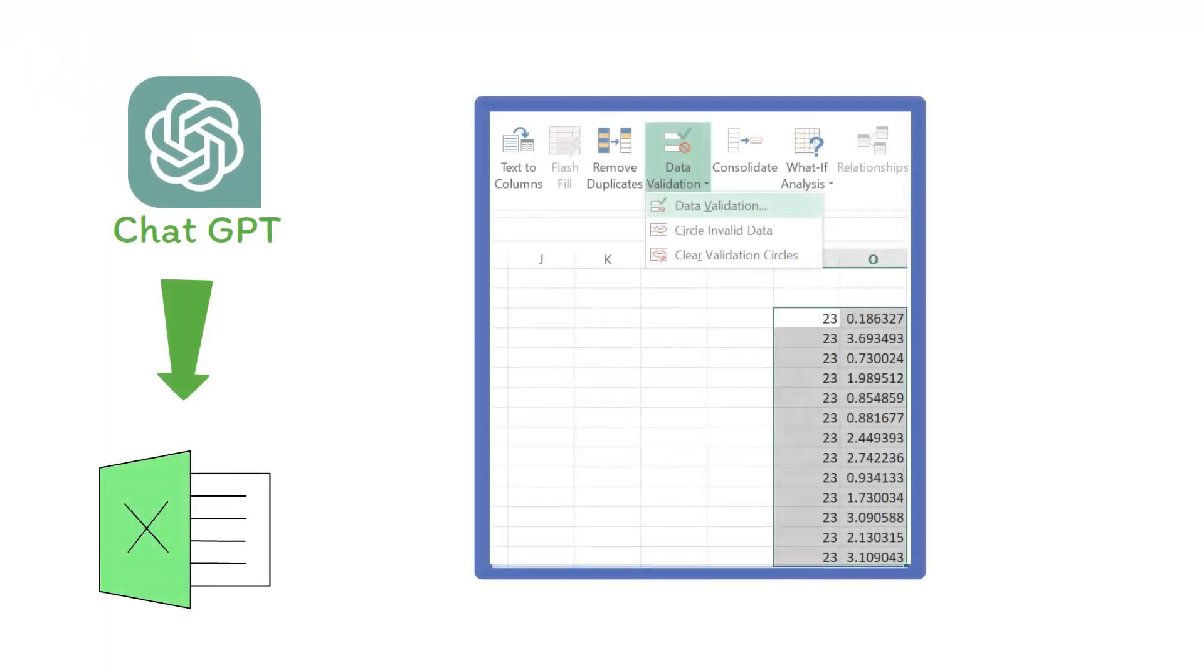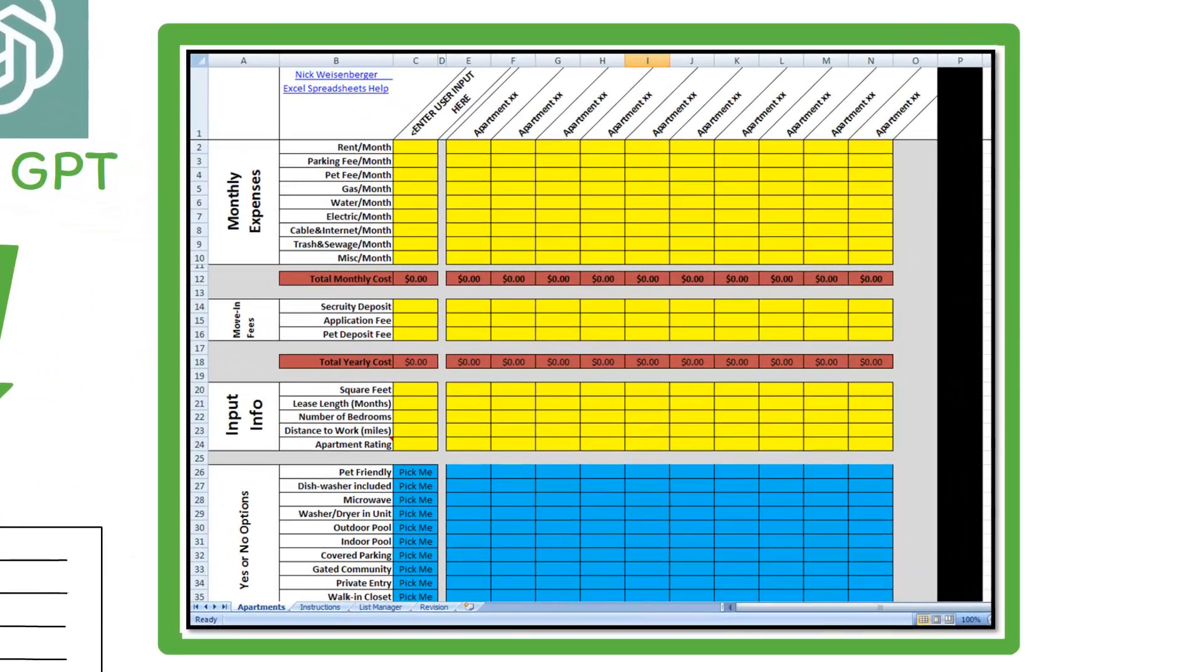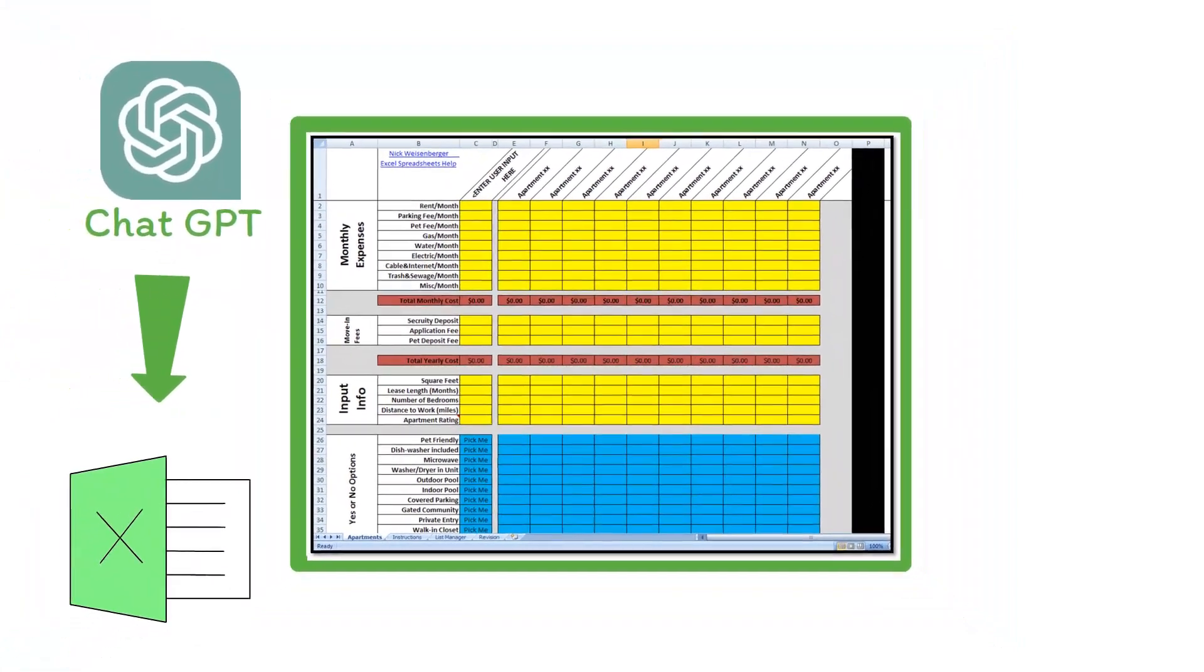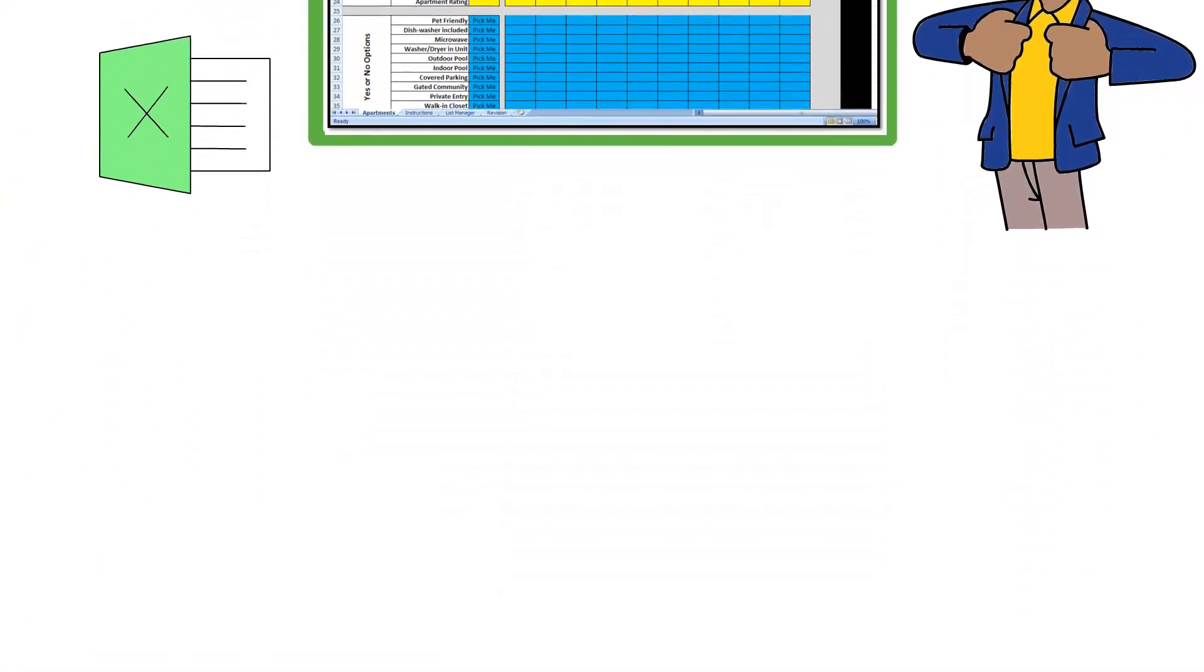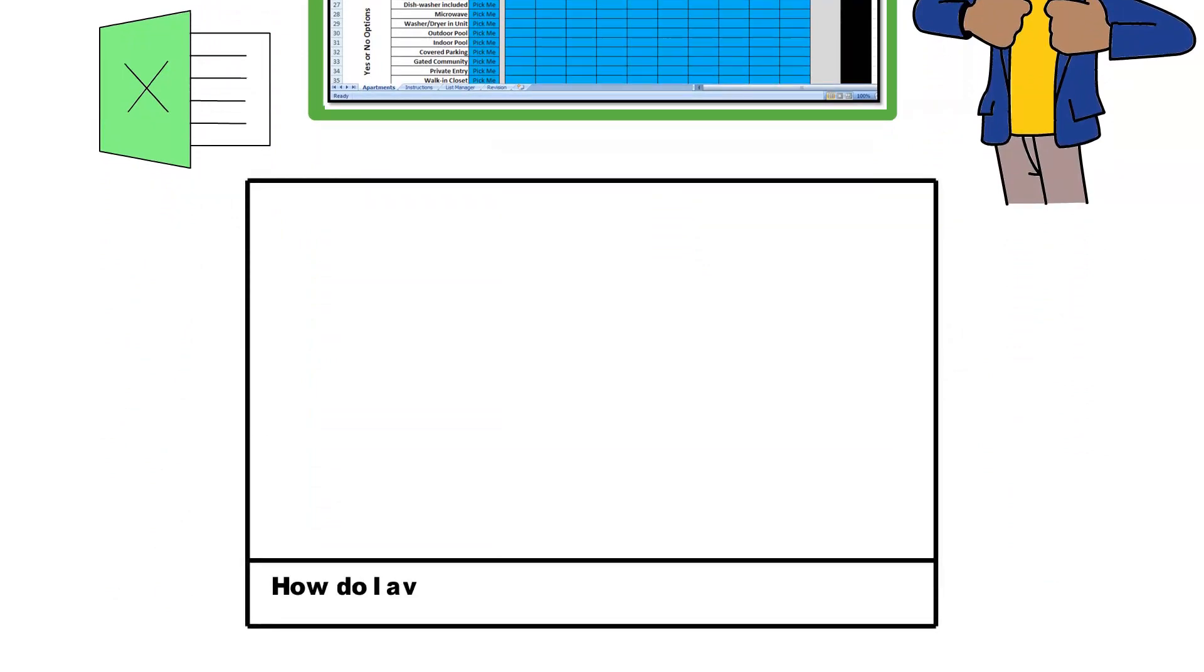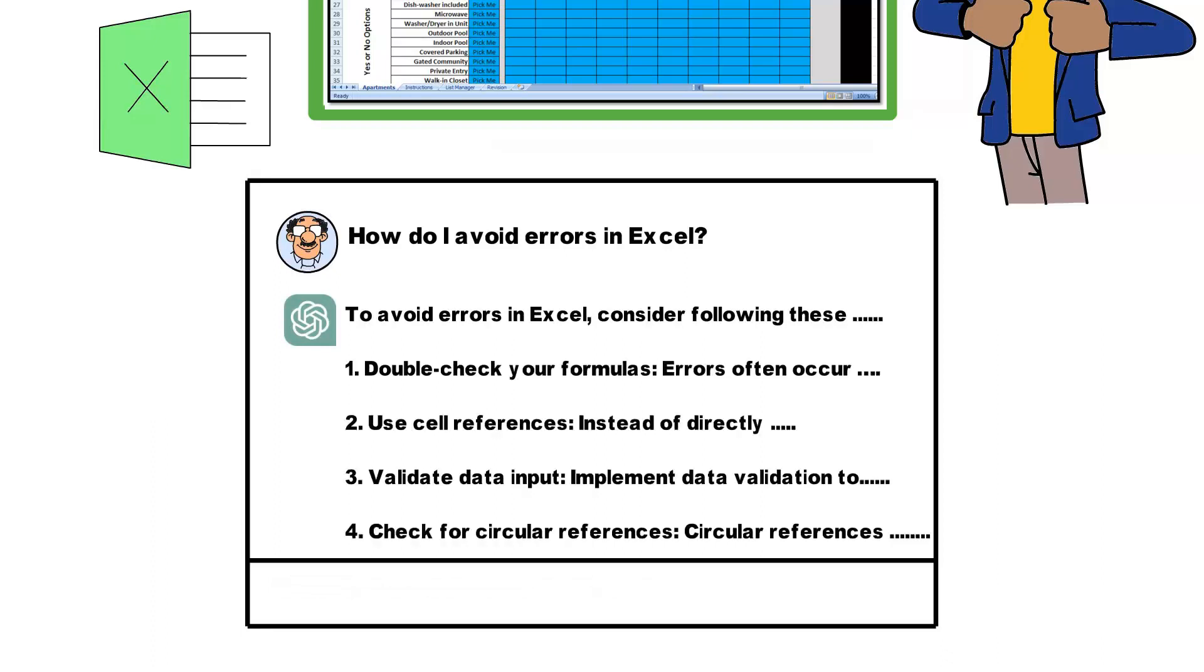Additionally, ChatGPT can provide guidance on Excel best practices. Good practices like data validation, conditional formatting, and error checking are essential for maintaining clean, efficient spreadsheets. With ChatGPT, you can learn these practices through interactive conversation. Ask questions like, how do I avoid errors in Excel? And ChatGPT will provide advice on error checking methods, explaining the importance of each and how to implement them.